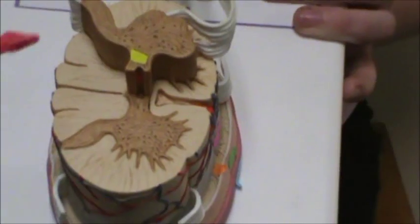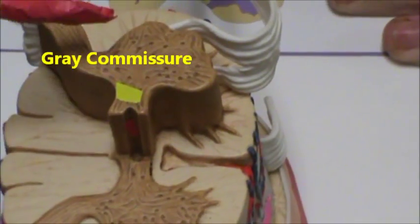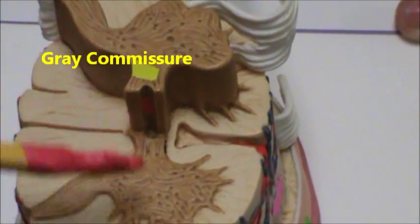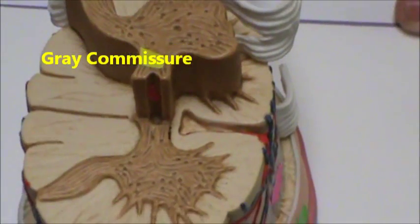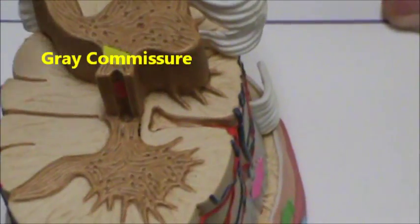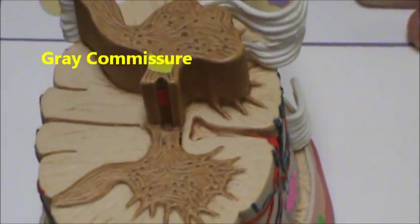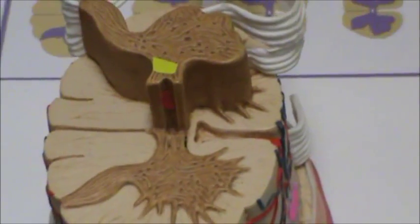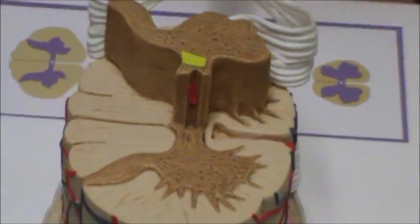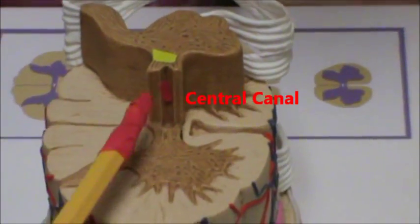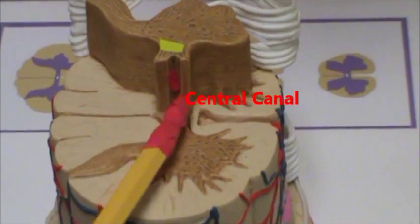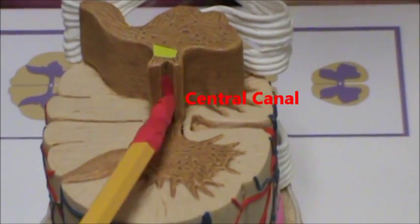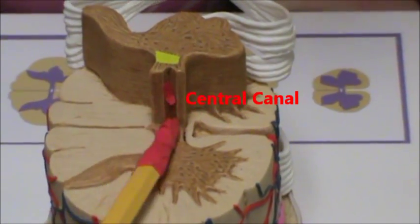Up here, I'm going to identify the gray commissure. This is where axons cross over to the different sides of the spinal cord. Within the gray matter there are white commissures also, but we're not going to identify that in this video. And right here is the central canal — this is where blood vessels travel through the spinal cord.